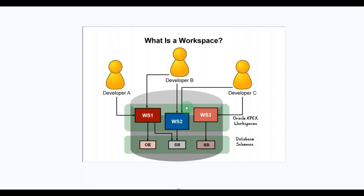In addition, B also has access to WS2. C can access WS2 and WS3. Each workspace has access to one or more database schemas. For example, WS1 has access to OE and SH, WS2 has access to SH, and WS3 has access to HR.